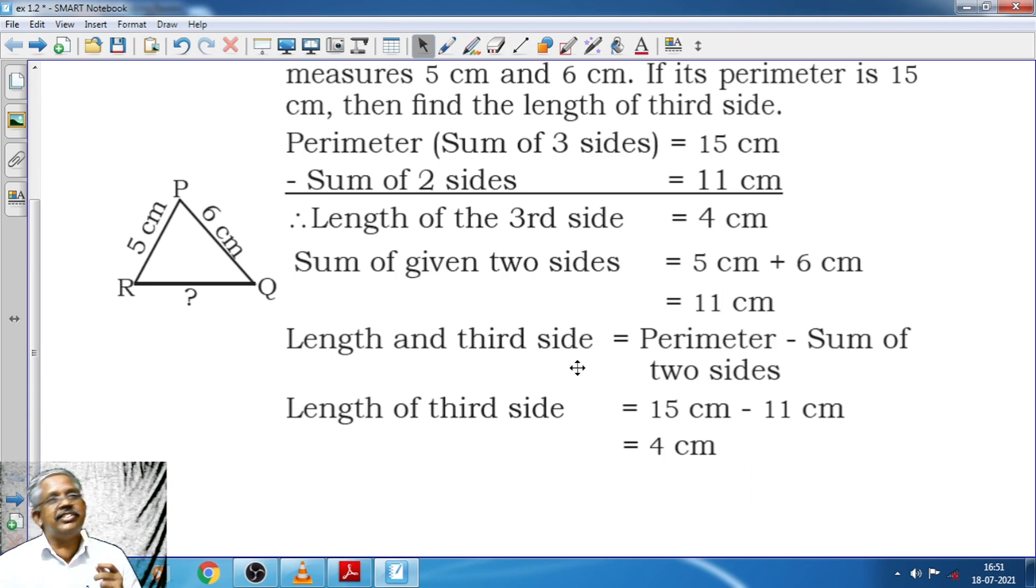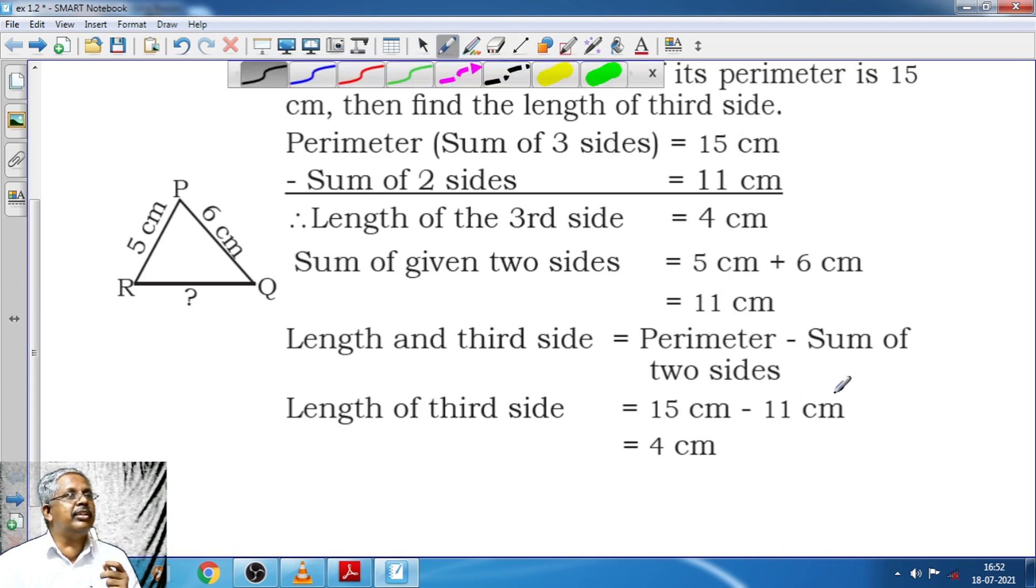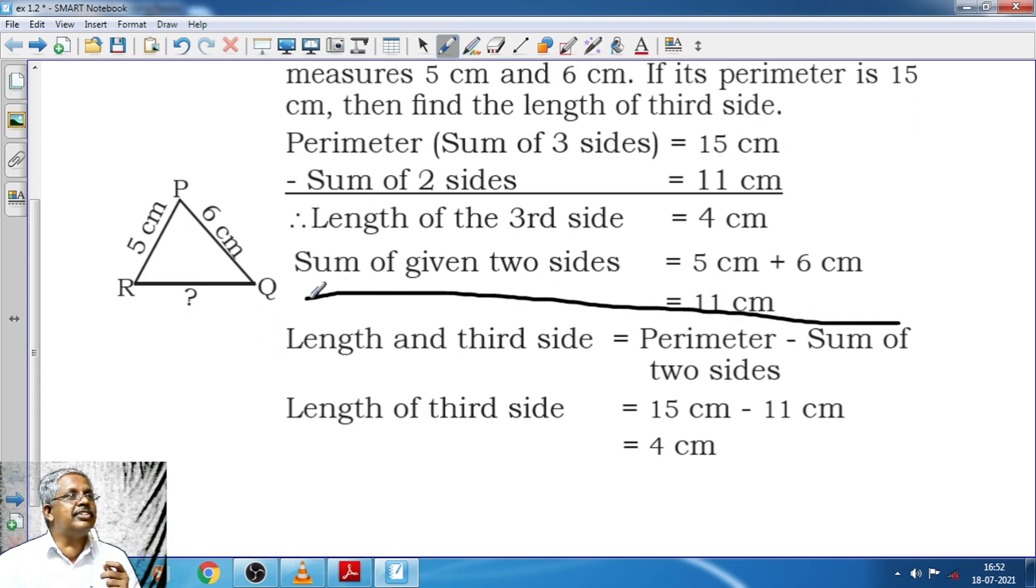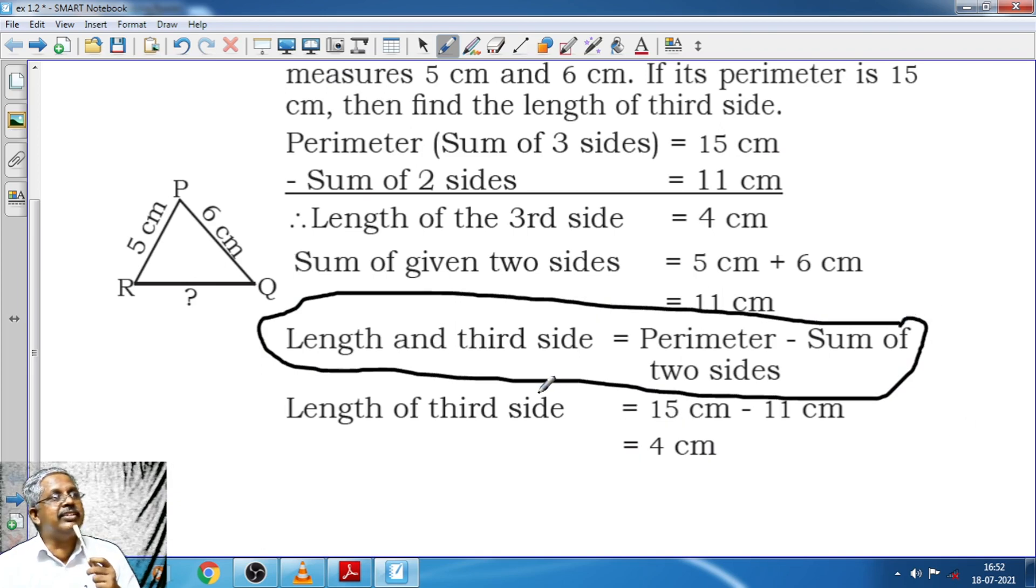Length of third side is equal to perimeter minus sum of two sides. That is the length of the third side is equal to 15 cm minus 11 cm which is equal to 4 cm. So we are going to work on this particular part. I am going to take this pen and I am going to work on this part of the formula. Length of third side is equal to perimeter of the given sides minus sum of two known sides.